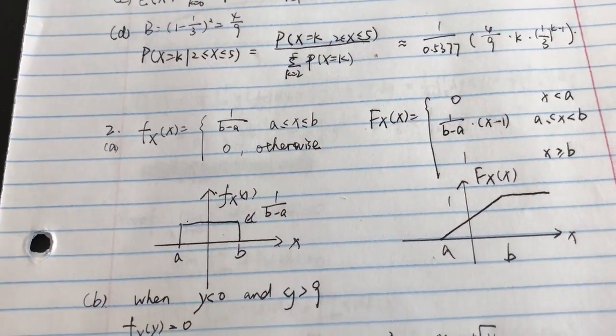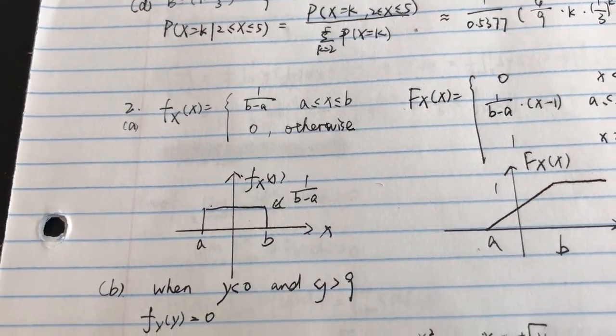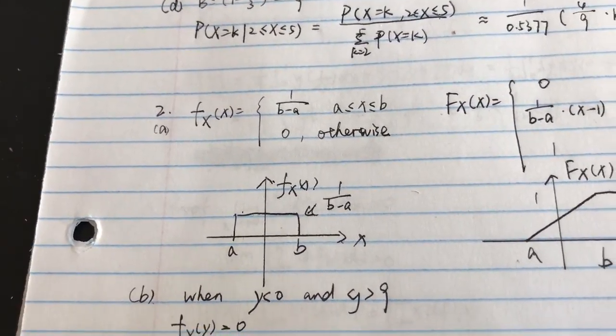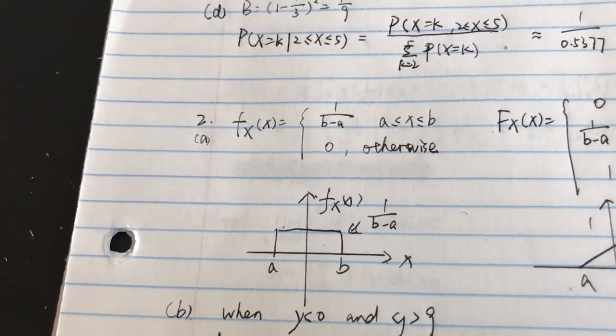Problem 2. Since x is uniform in a to b, and y equals x to the second power, we can calculate the density function.